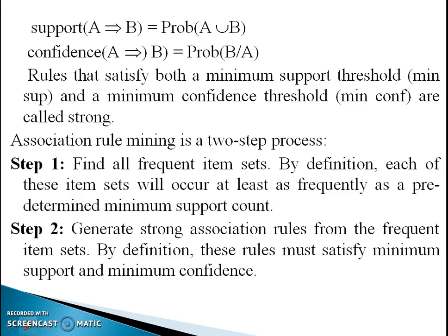For association rule mining, there are two steps. Step 1: Find all frequent itemsets — by definition, each of these itemsets will occur at least as frequently as a predetermined minimum support count. Step 2: Generate strong association rules from the frequent itemsets — by definition, these rules must satisfy the minimum support and minimum confidence thresholds.